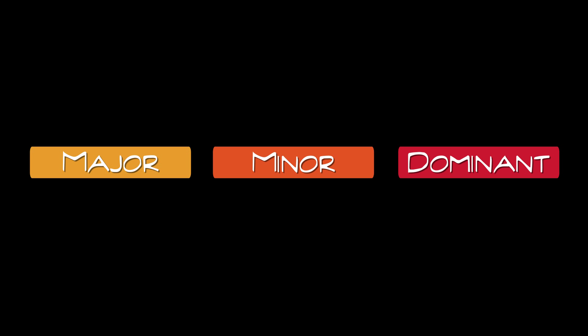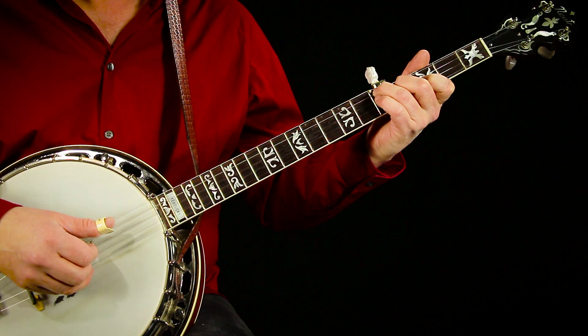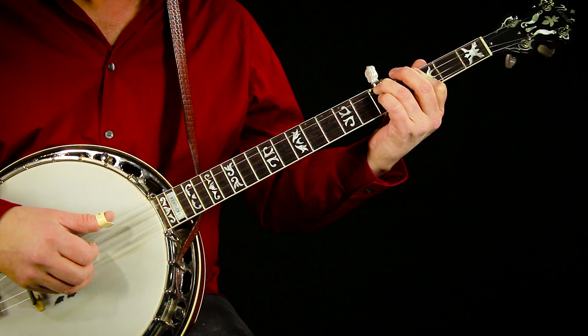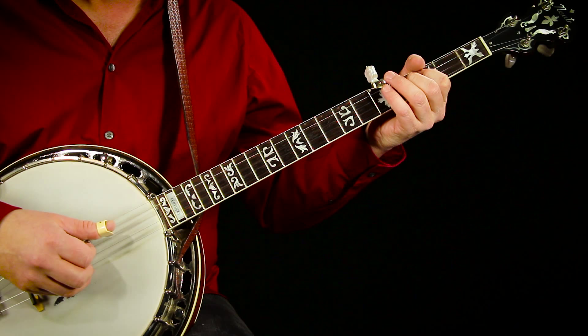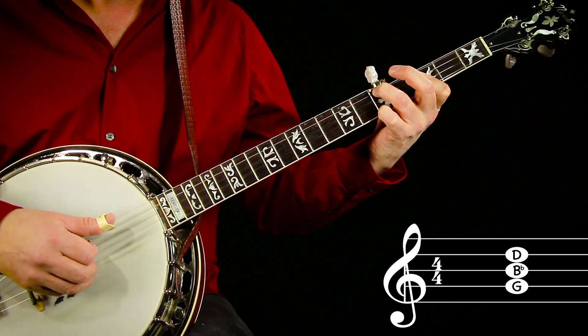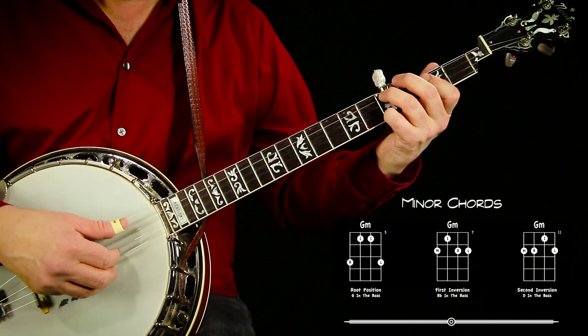We'll be going into more detail in future videos regarding chords, but for now let's take a look at minor and dominant seventh chords. To build a minor chord, we use the I, III, and V just like the major chord, but with one exception — we flat the third, which means you move the third down one half step, or one fret. In the key of G, the third is B, so move it down one fret and you get a Bb. The notes of a G minor chord are G, Bb, and D. Here are what the three basic shapes look like when you flat the third.